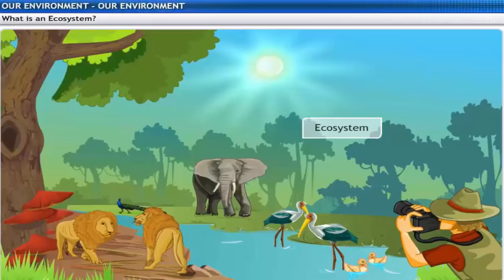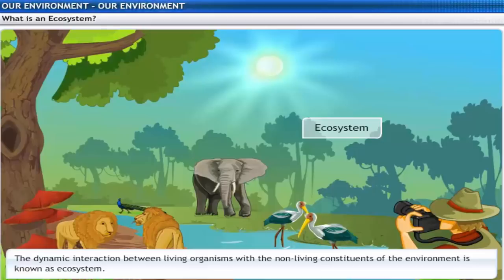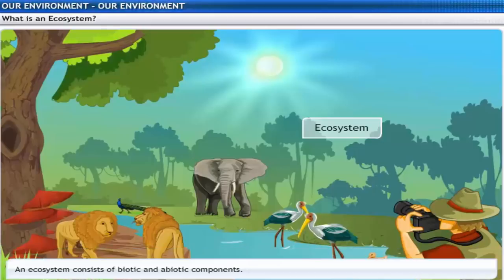All organisms such as plants, animals, microorganisms and human beings, as well as the physical surroundings, interact with each other and maintain a balance in nature. All these living organisms in an area interact with the non-living constituents of the environment, and such interaction is referred to as ecosystem. Thus an ecosystem consists of biotic components comprising living organisms and abiotic components comprising physical factors like temperature, rainfall, wind, soil, and minerals.